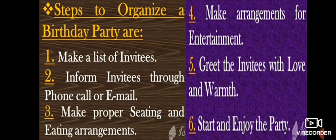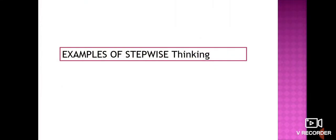Now, steps to organize a birthday party are: First, make a list of invitees. Second, inform invitees through phone call or email. Third, make proper sitting and eating arrangements. Fourth, make arrangements for entertainment. Fifth, greet the invitees with love and warmth. Sixth, start and enjoy the party. Every step written here holds its place and importance. If we don't follow the sequence or skip any step, the result will not be satisfactory. For example, if we don't start this activity, the making of a list of invitees, rather start with the second step, that is calling, chances are that we might forget to call a few of the guests. We would not have an exact idea also.